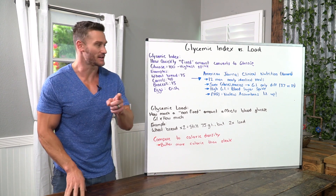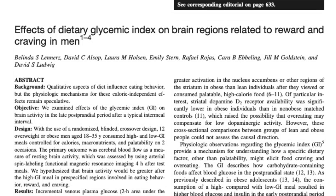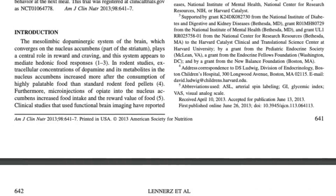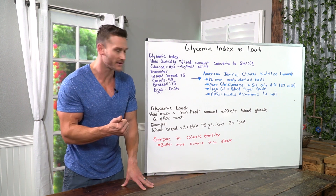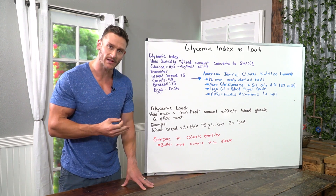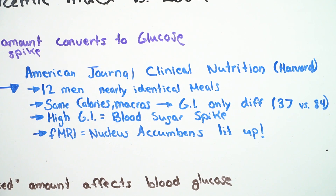Here's something pretty interesting. The American Journal of Clinical Nutrition published a study done out of Harvard. They took 12 men and gave them nearly identical meals — same calories, same macronutrients, same proteins, fats, and carbs. The only difference was the glycemic index was 37 in one group and 84 in another — high glycemic versus low glycemic. The participants didn't even know their food was different.